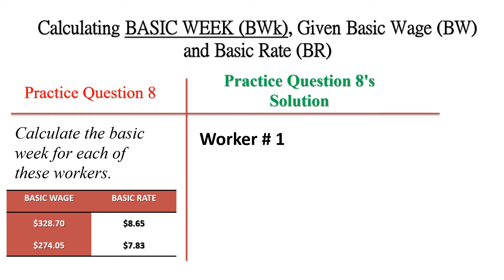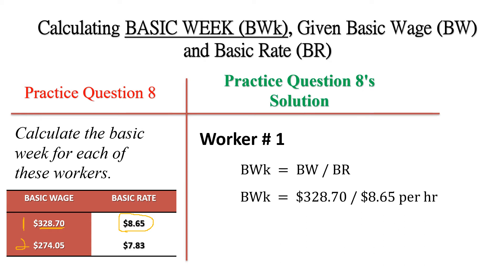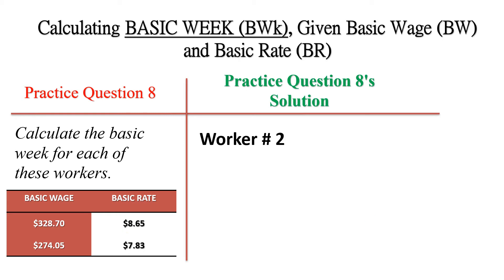Calculate the basic week for each of these workers. Worker number one gets a wage of $328.70 at a rate of $8.65 per hour. His basic week would be the basic wage divided by the basic rate: $328.70 divided by $8.65, giving a basic week of 38 hours.